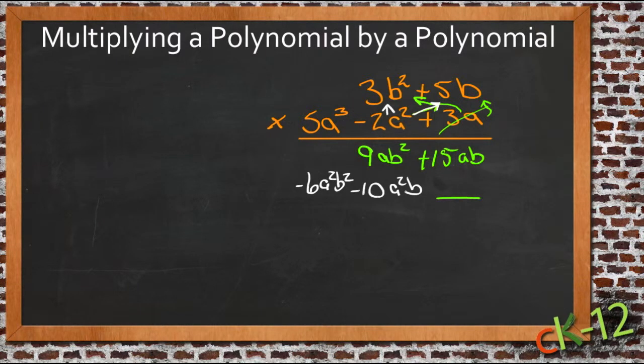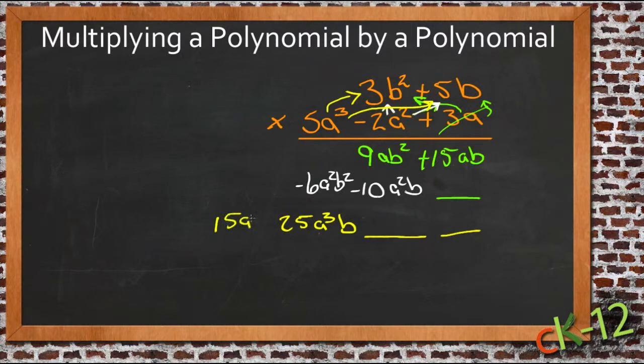So now we're going to go down one more line, pick another color here. Go down one more line and we'll skip two spaces. And we have 5a cubed times 5b, so that gives us 25a cubed b. And then 5a cubed times 3b squared is 15a cubed b squared.